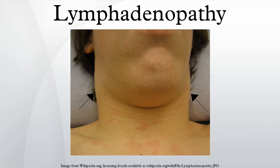Mesenteric lymphadenitis after viral systemic infection can commonly present like appendicitis. Less common infectious causes of lymphadenopathy may include bacterial infections such as cat scratch disease, tularemia, brucellosis, or Prevotella.